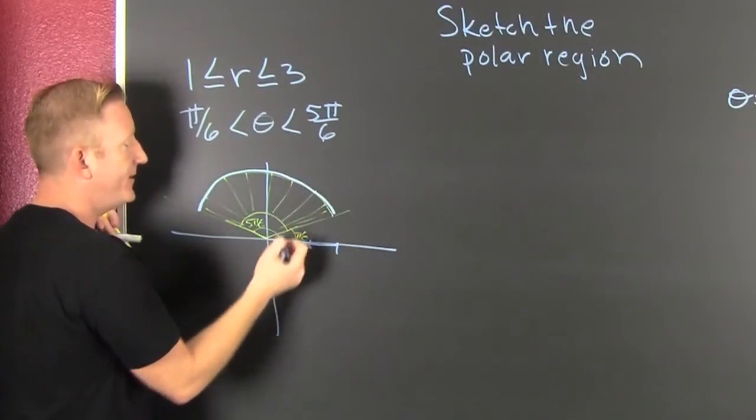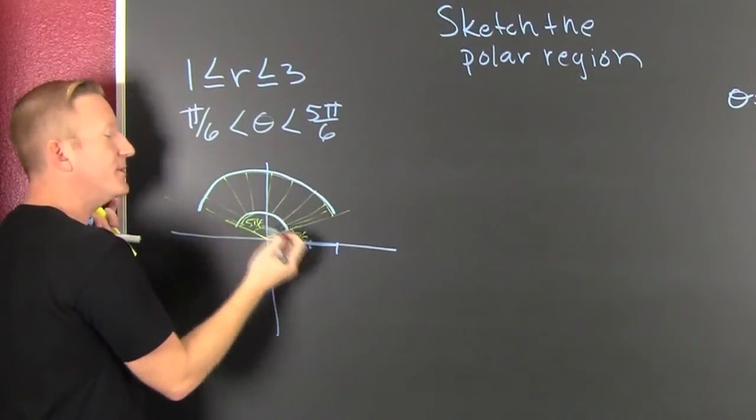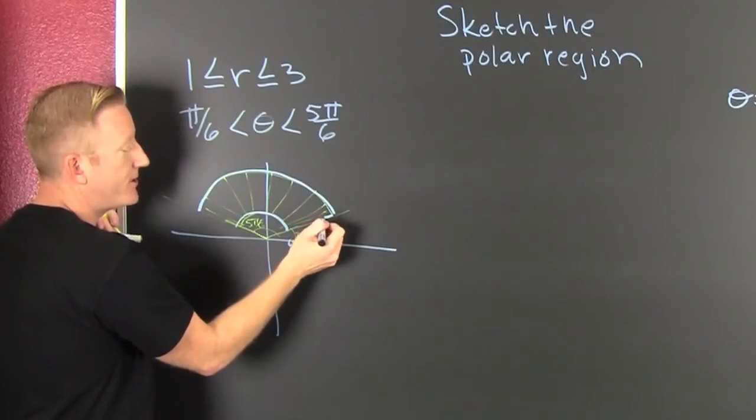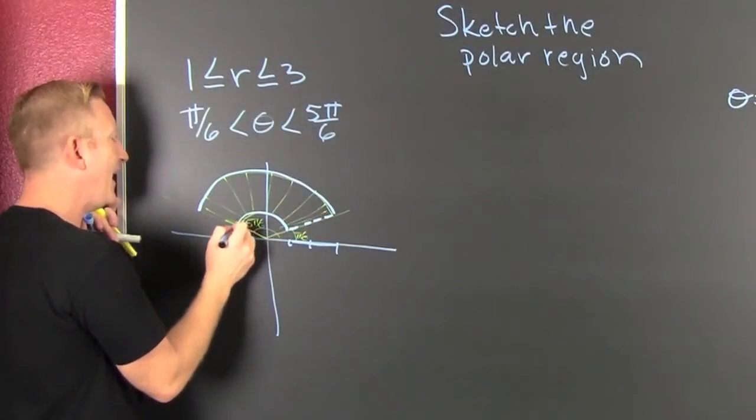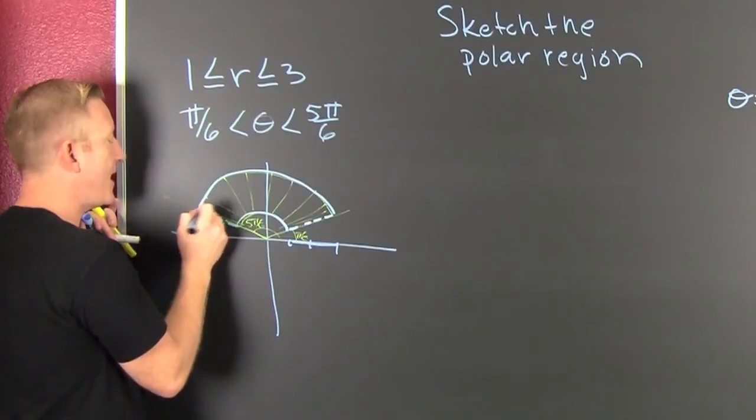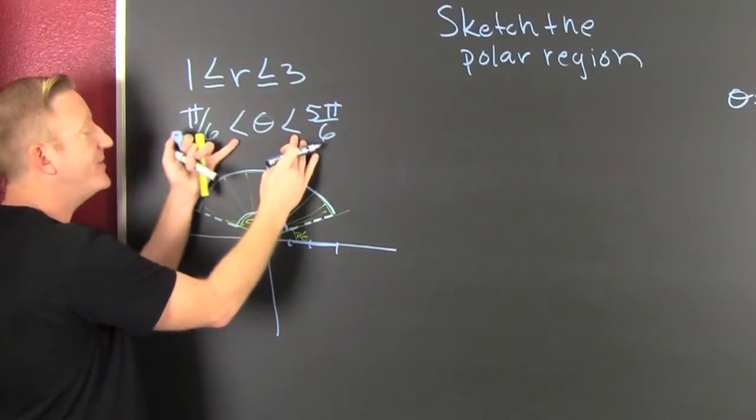And I probably shouldn't include these parts as dashed lines because those don't have the equalities.